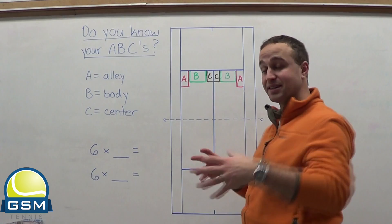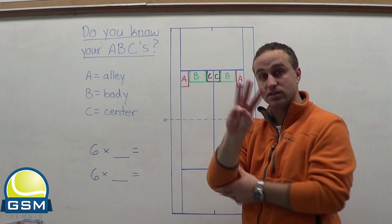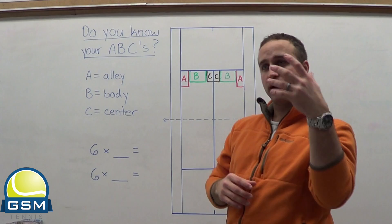So these are basically the six serves you need to have. You need to be able to place your serve in these three different locations on the deuce side and on the ad side. And I want to think about this.